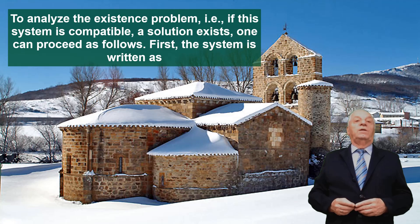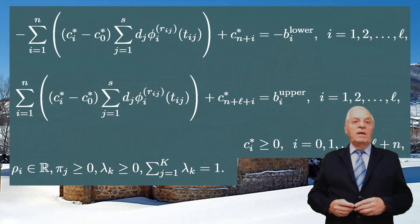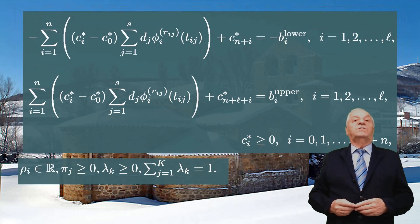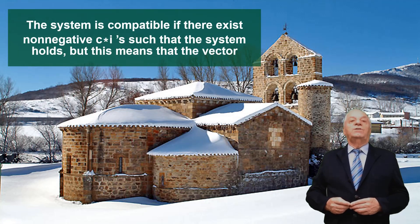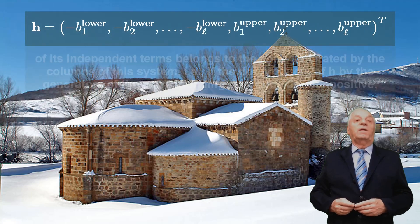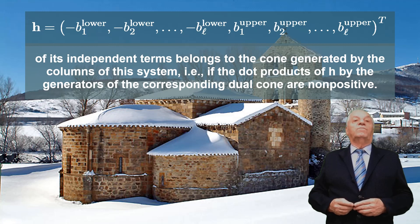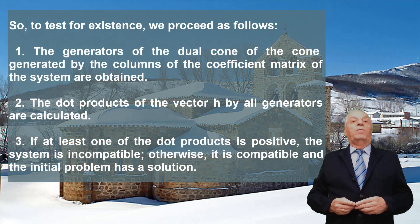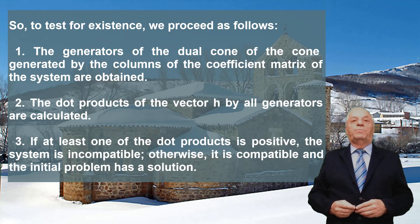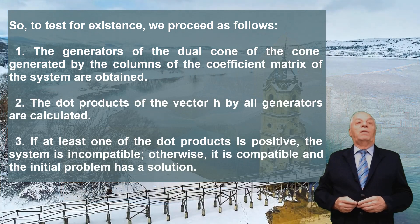First, the system is written in standard form, where the real variable ci is replaced by the difference of two non-negative variables: c*_i and c**_i, so that ci = c*_i − c**_i. The system is compatible if there exist non-negative c*_i values satisfying the system — meaning the vector of independent terms belongs to the cone generated by the columns of the system — that is, if the dot products of h by the generators of the corresponding dual cone are non-positive. First, the generators of the dual cone are obtained; second, the dot products of vector h by all generators are calculated; third, if at least one dot product is positive, the system is incompatible; otherwise, it is compatible and the initial problem has a solution.